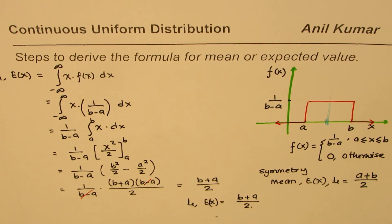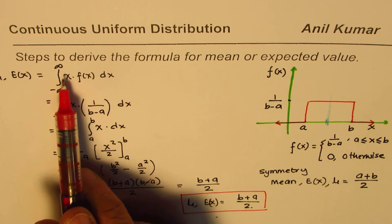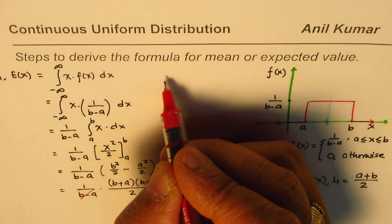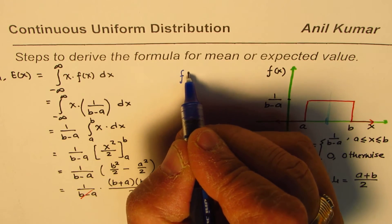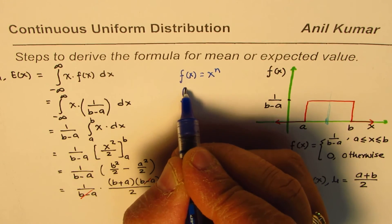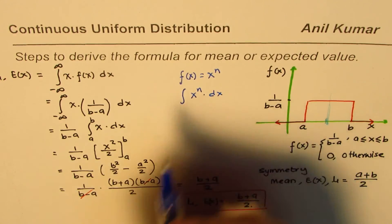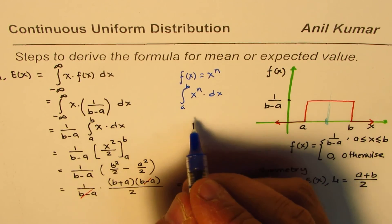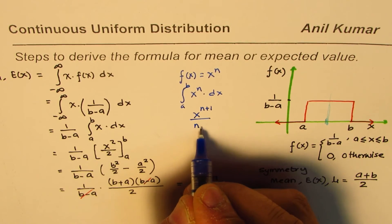So we have derived the formula: mu, or expected value, equals b plus a divided by 2. This is a very simple derivation, especially for those who have taken calculus. We used the power rule: the integral from a to b of x to the power of n dx equals x to the power of n plus 1 divided by n plus 1, evaluated from a to b.